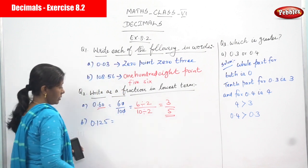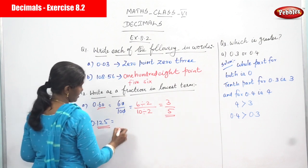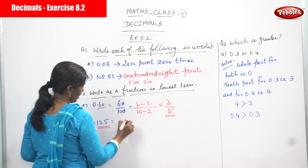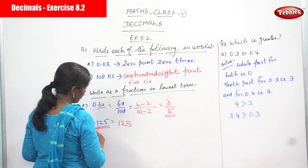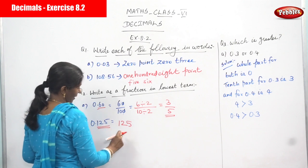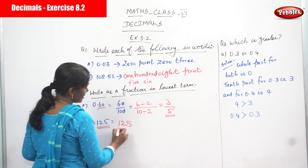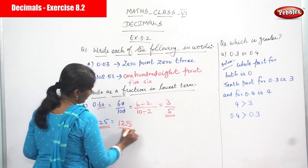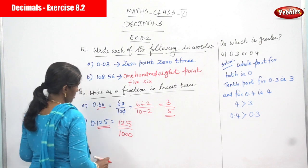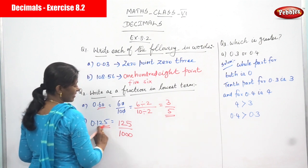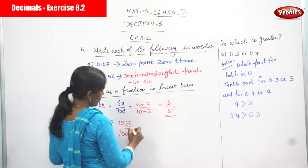Next is 0.125. After the point, what is the number? You write 125. After the point there are 3 digits, so when you convert into a fraction you must write 125 divided by 1000. You write 1000 because there are 3 digits after the point.